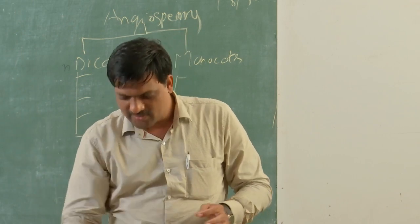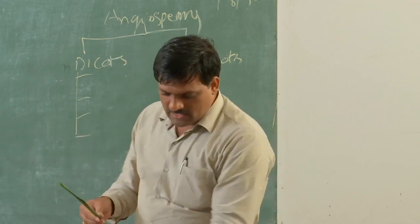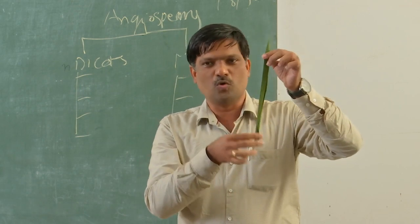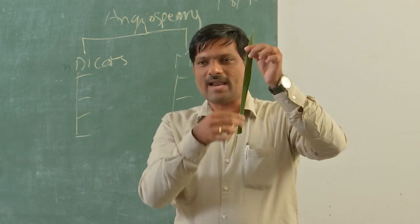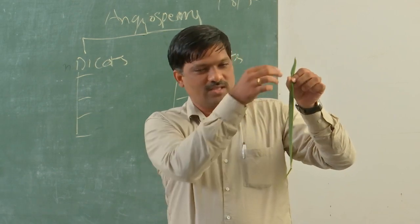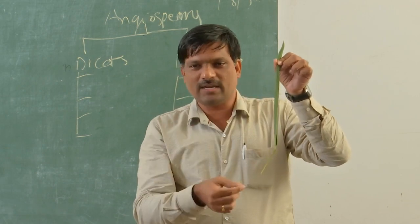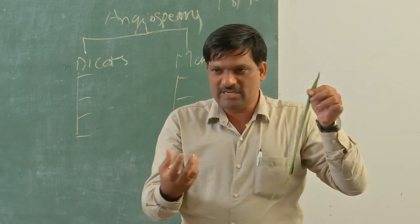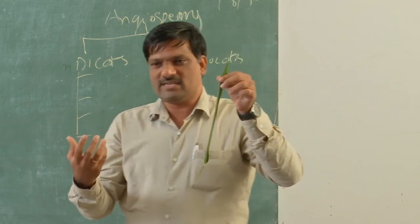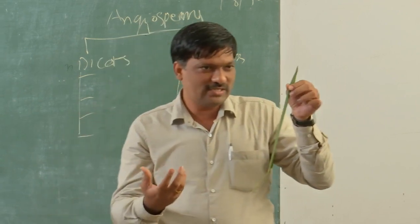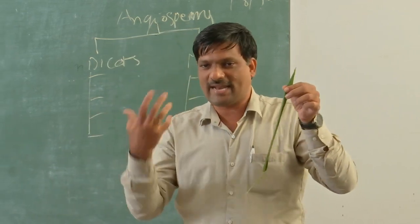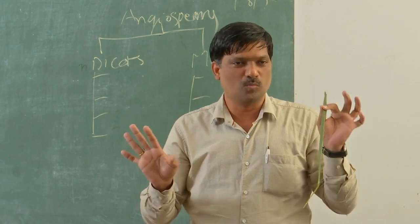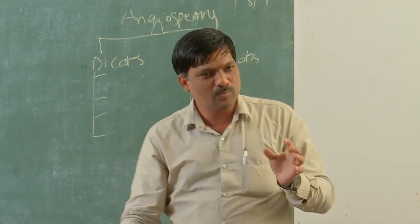Now look at this leaf — there is no reticulate venation here, only parallel venation, meaning all the veins are arranged parallel to each other. You may have observed this in wheat leaves, maize leaves, rice leaves, and even grass leaves. All of those are monocots.